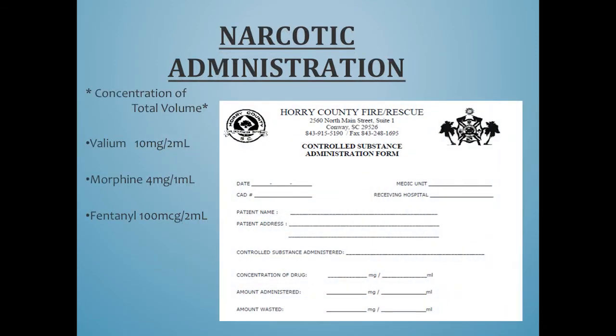I want to talk a little bit about the narc form. Many people have been getting a little confused with the concentration of the drug field. What Horry County Fire Rescue is looking for is the concentration of the total volume — basically what is in that carpuject when you pull it out or what's in that vial. We carry morphine at 10 milligrams to 2 milliliters, morphine at 4 milligrams to 1 milliliter, and fentanyl at 100 micrograms to 2 milliliters. That total volume concentration goes in the concentration of drug field.